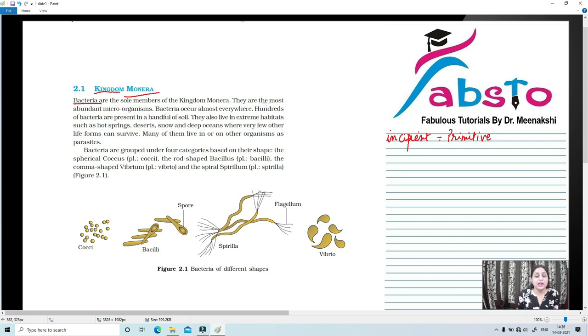Now, bacteria are the most abundant microorganisms and they occur almost everywhere. So, occurring almost everywhere, which word do we use? Omnipresent. We can say that bacteria are omnipresent. First of all, we have studied that bacteria are the sole members of Kingdom Monera. Secondly, they are the most abundant microorganisms. And thirdly, they occur almost everywhere, that is, they are omnipresent.